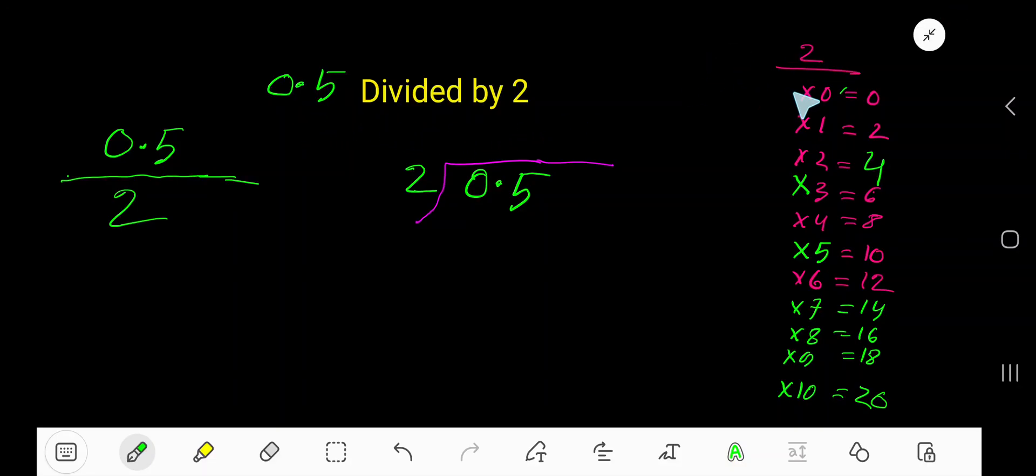0.5 divided by 2. 2 times 0 is 0, 2 times 1 is 2, 2 times 2 is 4, 2 times 3 is 6. To find out the multiplication table of 2, just add 2: 0 plus 2 is 2, 2 plus 2 is 4, 4 plus 2 is 6, 6 plus 2 is 8. Okay.